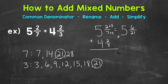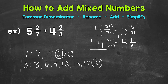We're not changing the value of the problem at all — these are equivalent fractions, we're just renaming using that common denominator. Let's bring the addition sign over and then rename 4 and 2 thirds. We do not need to do anything with the whole number. How do we get 3 to equal 21? 3 times 7 is 21. Whatever we do to the bottom, we must do to the top — 2 times 7 is 14.